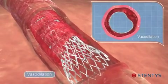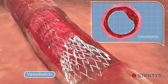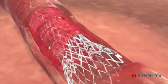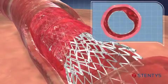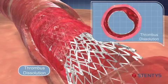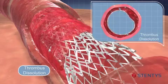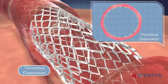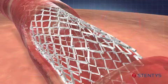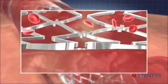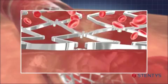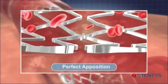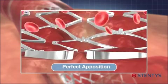As spasm is relieved, the vessel diameter increases, and the stent follows in expansion and continues its scaffolding of the artery. Finally, as the thrombus dissolves, the stent expands further to absorb the gap left by the dissolving thrombus, thus maintaining a perfect apposition throughout the remodeling process of the vessel.